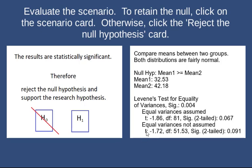Looking under the equal variances not assumed heading, we see that for this statistical test the t-value is negative 1.72, degrees of freedom is 51.53, and the significance two-tail is 0.091.